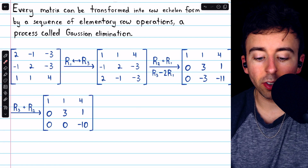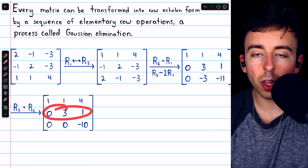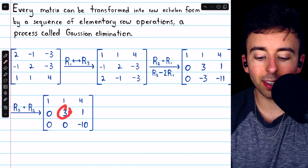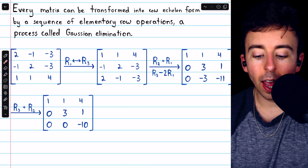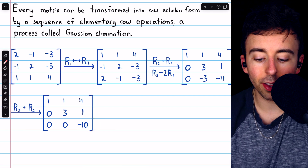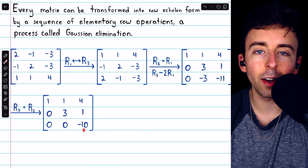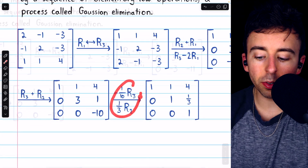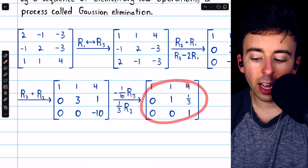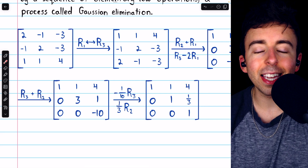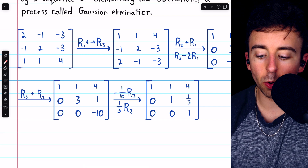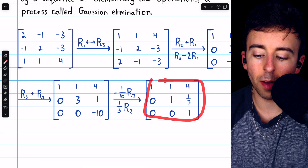Now all we have to do is multiply row two by one-third to turn this entry into a positive one, and multiply row three by negative one-tenth to turn that entry into positive one. Doing those two multiplications gets us to this matrix, which finally is in row echelon form. So we would stop here.